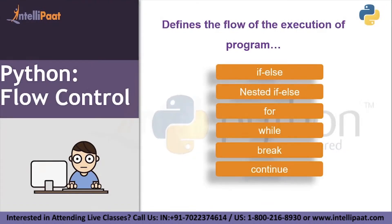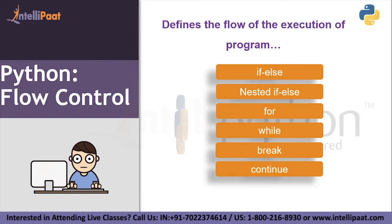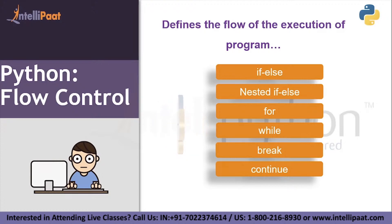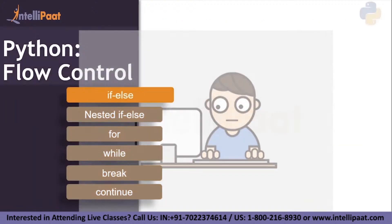Next is Python flow control. Flow controls are the ones which control the flow of execution of your program. We have six different types of flow control in Python: if-else, nested if-else, for, while, break, and continue. Let's discuss them one by one, starting with if-else.